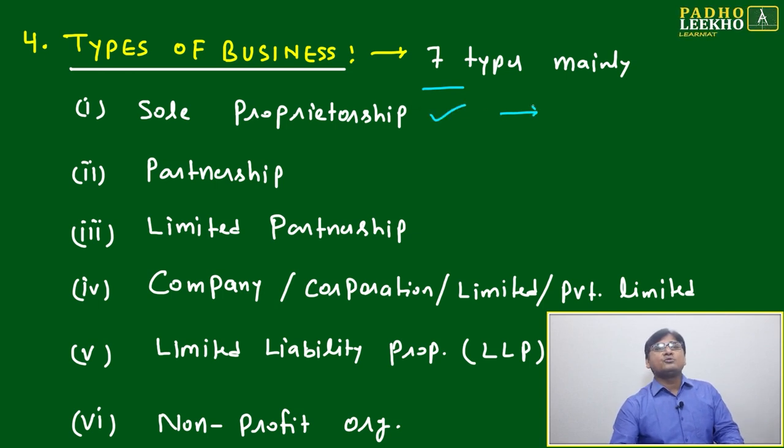First is sole proprietorship, which means only one person is there. All capital belongs to one person and they will not dilute anything. It is complete proprietorship. Next is partnership.